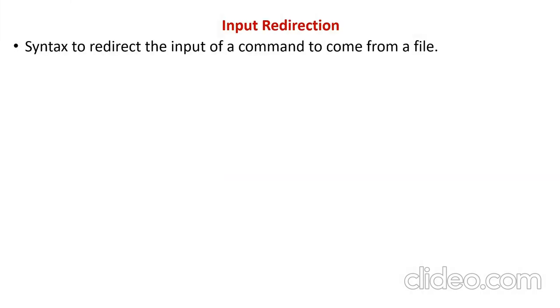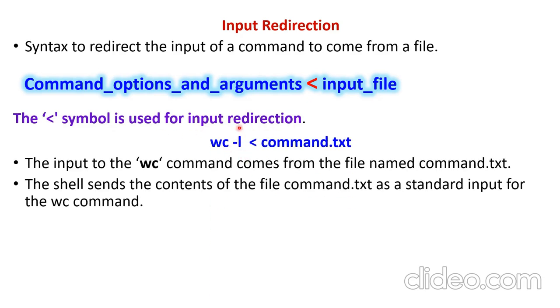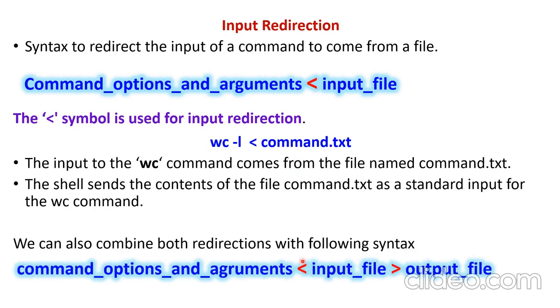First one, input redirection. The syntax to redirect the input of a command to come from a file is command with the option and with the argument. And this less than bracket is used to denote your input redirection followed by the file name. The less than symbol is used for input redirection. This is input redirection. This is output redirection you are going to see in the subsequent slides.